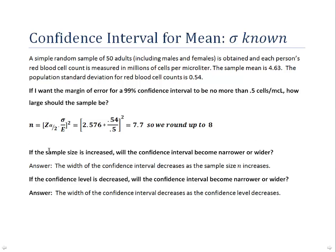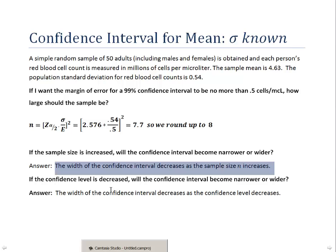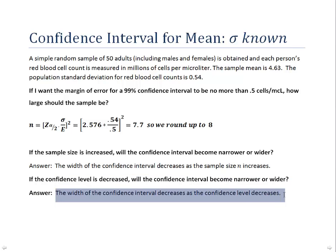The next question asks: if we increase the sample size, what happens to the confidence interval? As the sample size N increases, the width of the confidence interval decreases. Larger samples give us more confidence in our point estimate, meaning our margin of error is smaller. It might seem contradictory, but the opposite is true when we think about the confidence level: as we decrease the confidence level, we actually decrease the width of the confidence interval.